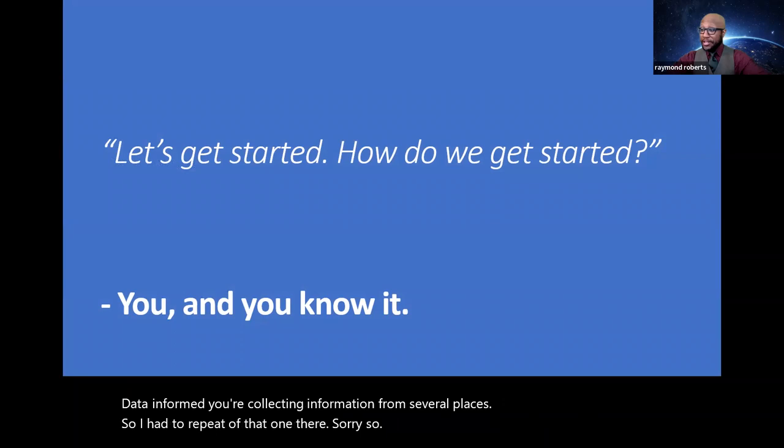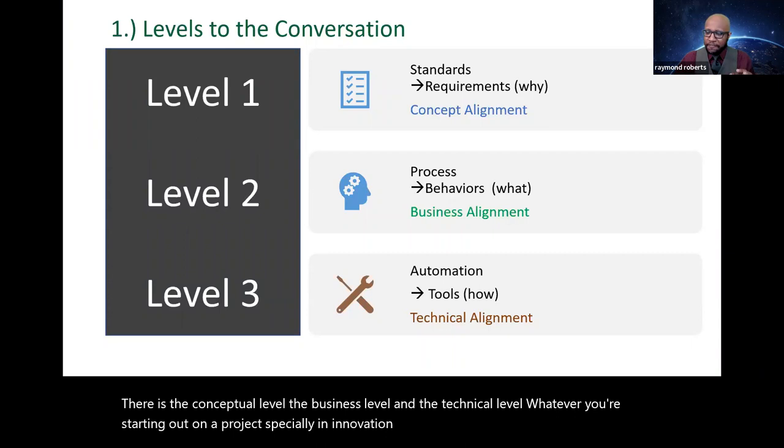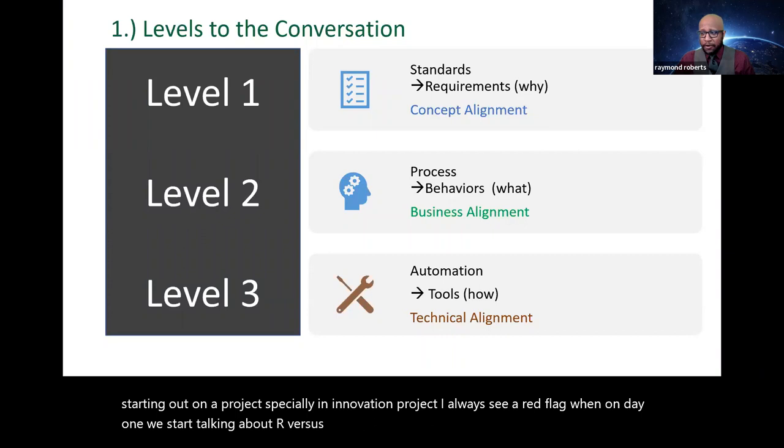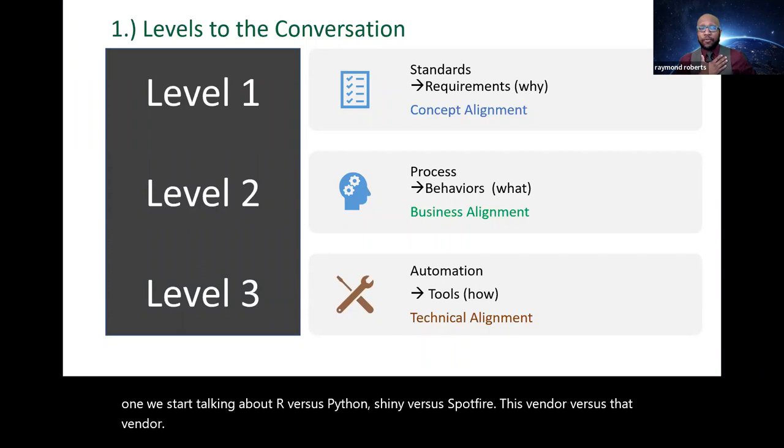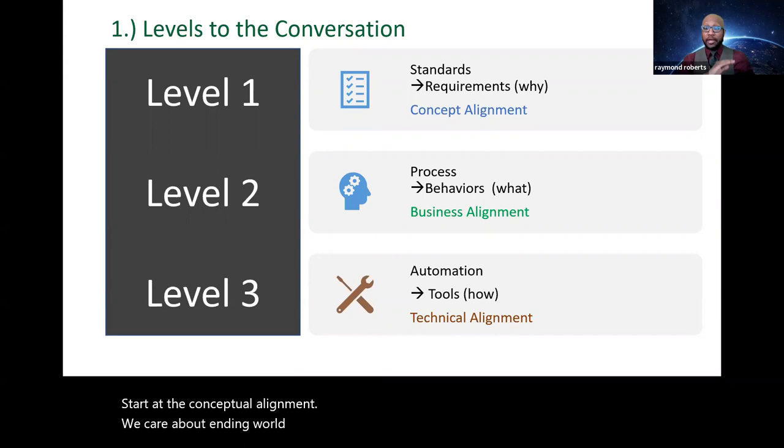But a repeat of that one there. Sorry. So we just did a crash course on language and culture. So now let's get started. But how did we get started? And I'm attributing that quote to you and you know it. Levels to a conversation. There's the conceptual level, the business level, and the technical level. Whenever you're starting out on a project, especially an innovation project, I always see a red flag when on day one, we start talking about R versus Python, Shiny versus Spotfire, this vendor versus that vendor. I don't know what we care about. I don't know what we're trying to achieve. Start at the conceptual alignment.